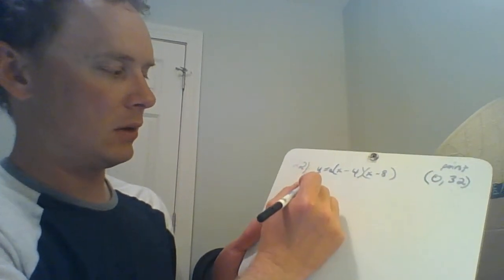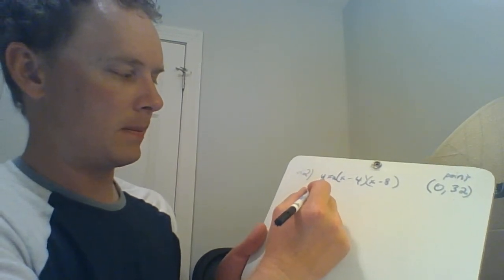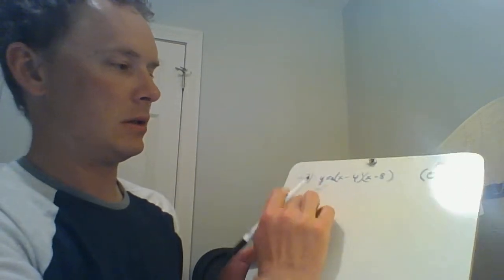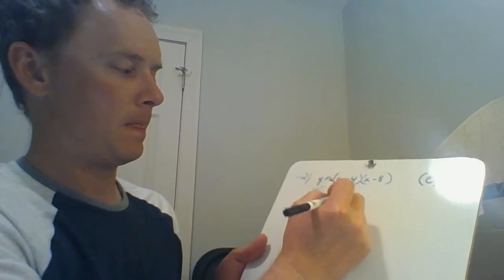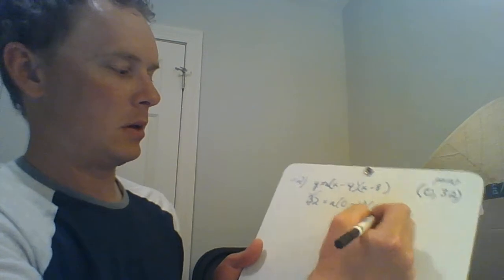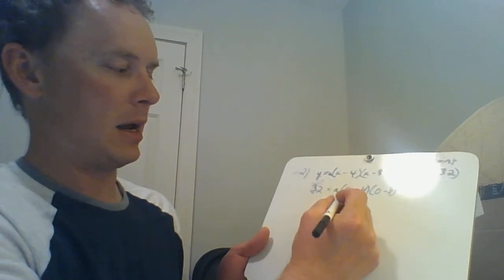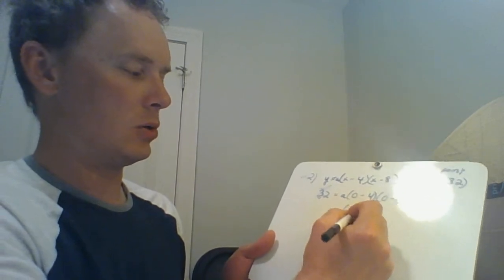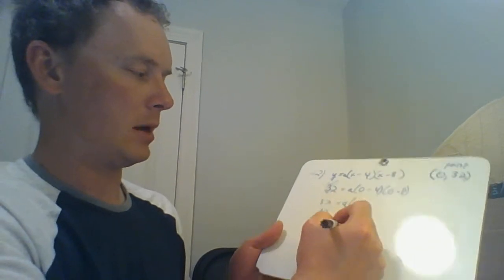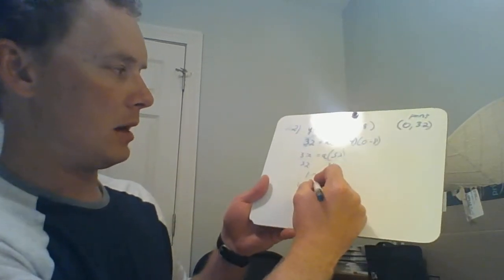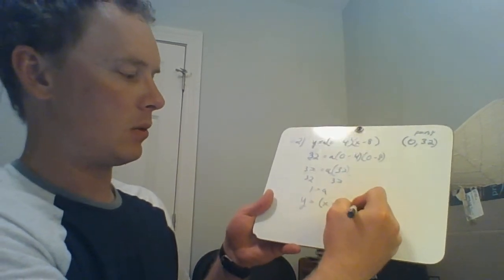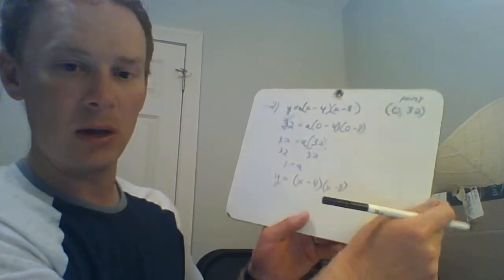So, what you would do in this case is you're trying to find a essentially. You could plug 32 in for y, 0 in for x. And so, you get a times negative 4 times negative 8 is 32. And then you divide by 32 and you get 1. So a is 1. So now you know a is 1. Now I have x minus 4 times the quantity x minus 8. Now, we still got to get this into vertex form.